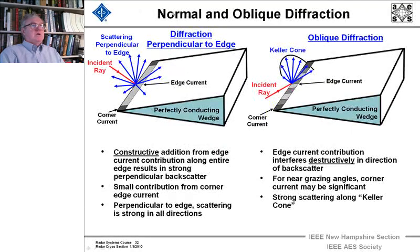Now here's how we can understand normal and oblique diffraction when we're both perpendicular to the edge and when we're at oblique incidence. If we're perpendicular to the edge, we have constructive addition from the edge currents along the entire edge resulting in a strong perpendicular backscatter. And again, this very small contribution from the corner edge currents. But perpendicular to the edge, the scattering is strong in all directions.